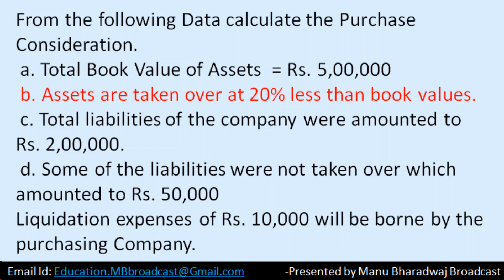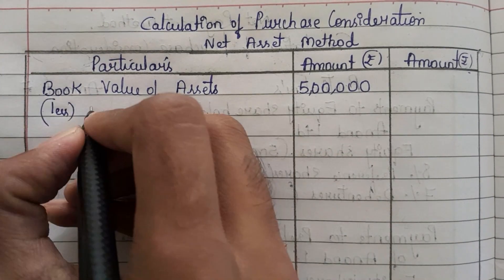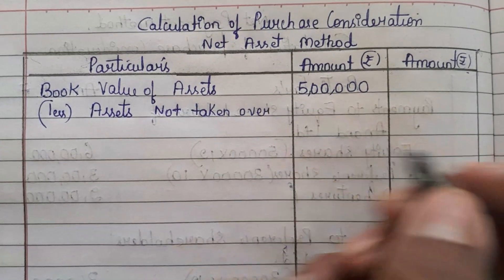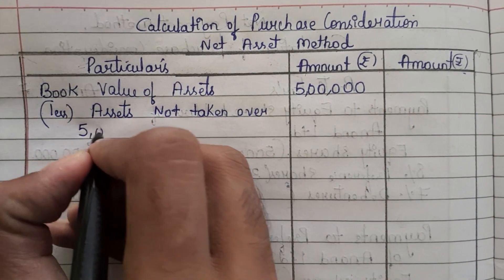Assets are taken over at 20% less than book value. So out of the total assets, 20% of assets they are not taking. So you have to subtract that. Write 'less: assets not taken over' — how much? 20% of total assets. Total assets is 5 lakh, so 20% of that needs to be deducted.